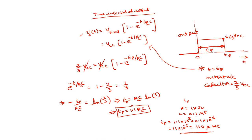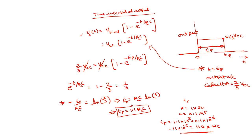This is the monostable multivibrator, which has plenty of applications. It is called monostable because there is only one stable state — the low state. The high state is temporary; whenever you apply the trigger pulse it goes high, but finally it comes back to low only. We will discuss some of the applications of this monostable multivibrator in the next lecture.